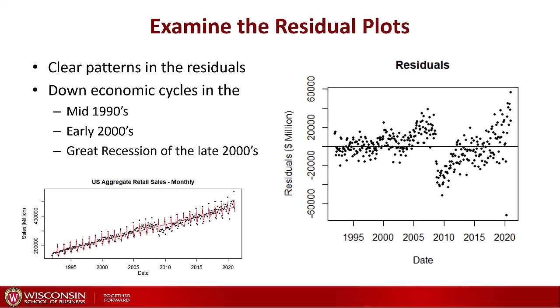How do we identify these peaks and valleys — these cycles — in the data we have? Once we run our regression and control for both the trend and the seasonality, we can look at the residuals and we can see clear patterns there.